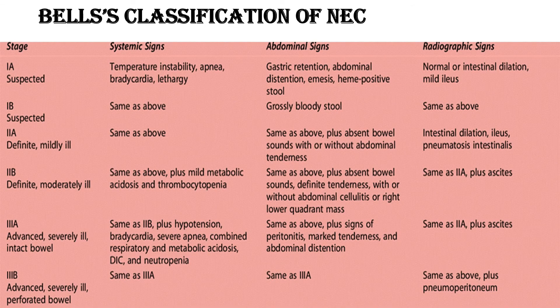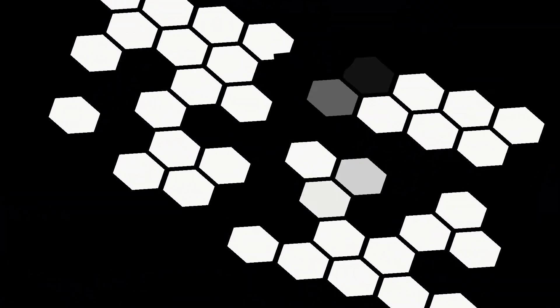Now let's go to Bell's classification of necrotizing enterocolitis. There are basically three stages or classes in which necrotizing enterocolitis is divided. Each class is subdivided into two — 1a, 1b, and so on. This table seems lengthy and full of information, but I will make it understandable with the help of diagrams. The first class is basically 'suspect.'